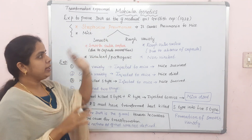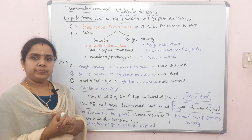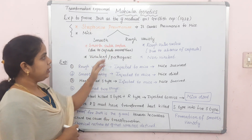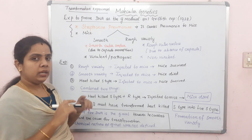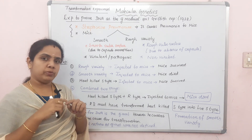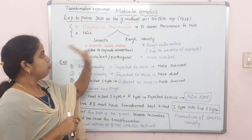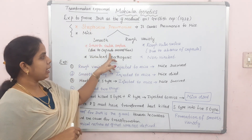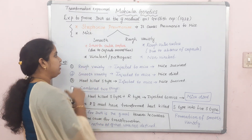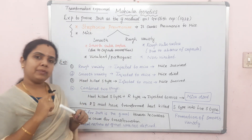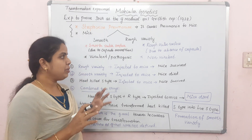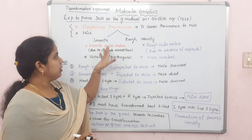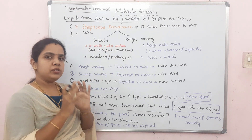In Streptococcus pneumoniae, there are two varieties. One is the smooth variety and the other is the rough variety. The smooth variety has a smooth outer surface due to a capsule around the bacteria, which is made up of polysaccharides. This capsule makes the surface smooth.